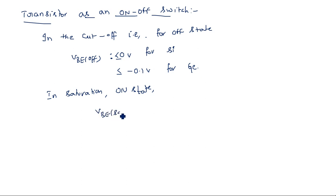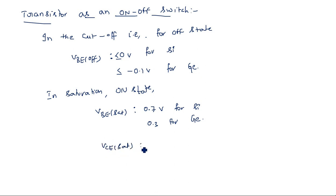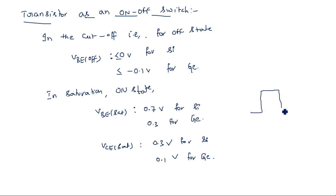In the saturation region (ON state), VBEsat must be 0.7 volts for silicon and 0.3 volts for germanium. For VCEsat, it is 0.3 volts for silicon and 0.1 volt for germanium. The output saturation voltage VCEsat is very low compared to VBEsat, because to achieve full voltage swing from VCC to 0 volts, these specifications and the selection of each component make the fixed bias configuration stable and accurate.